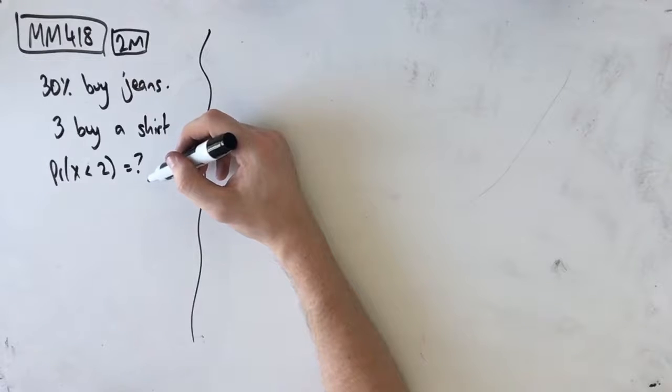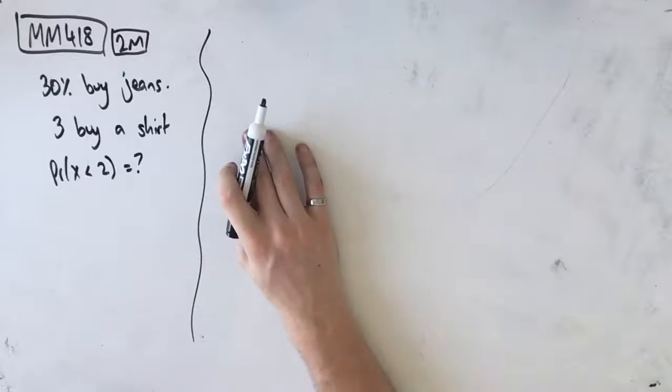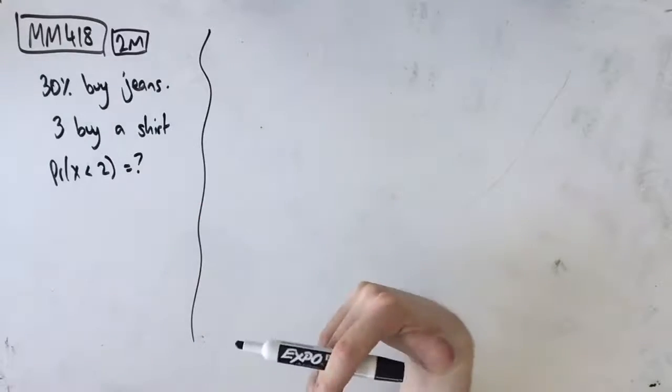Assume that each customer's purchase is independent of any other customer's purchase. That last sentence that tells us it's independent is really important because it gives us a clue as to what kind of probability we're going to use. In this case, we're going to use binomial.